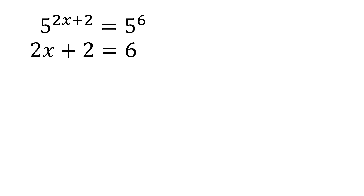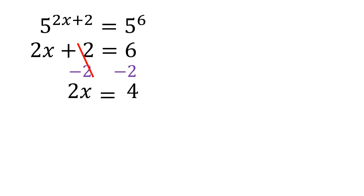So what should x be so that 2x plus 2 is equal to 6? Now let's solve for x. We're going to separate those with x and those without x. Since the plus 2 doesn't have x, we're going to transfer it to the other side by subtracting 2 on both sides to cancel it. What's left is only 2x, and on the other side 6 minus 2 is 4. Whatever you do on the left side, also do it on the right side. So we have 2x equals 4.